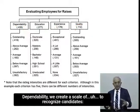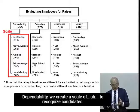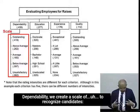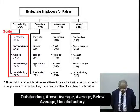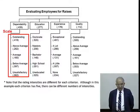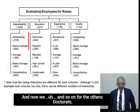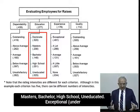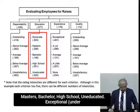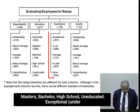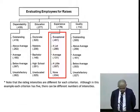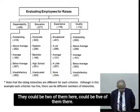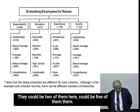Under dependability, we create a scale to recognize candidates: outstanding, above average, average, below average, unsatisfactory. And so on for the others — doctorate, master, bachelor, high school, uneducated — and for experience: exceptional, a lot, average, little, none. They don't have to be the same number; there could be two levels here and five there.